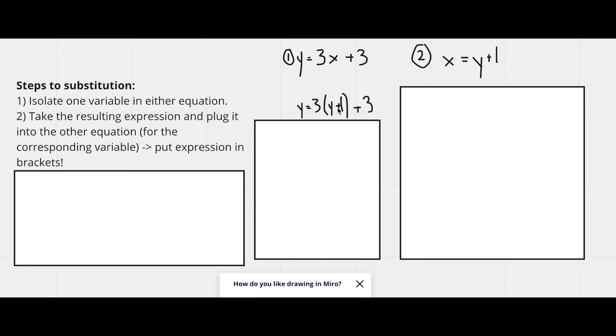Now what this has done is that it's made an equation with only one variable left. Now there's only y's in this equation, and I can actually solve it. So I take the y plus 1, and I put it in brackets in for x in this equation right here. As it says right here, put the expression in brackets.